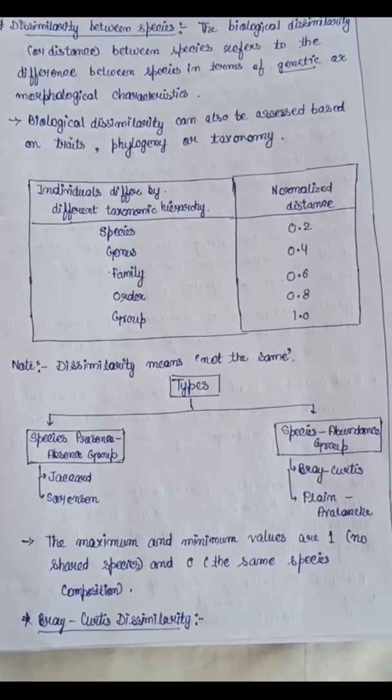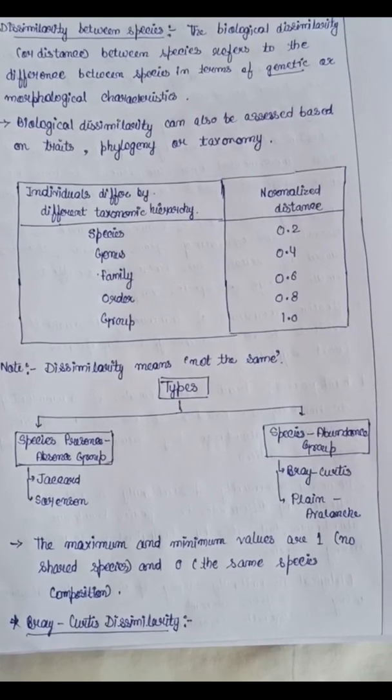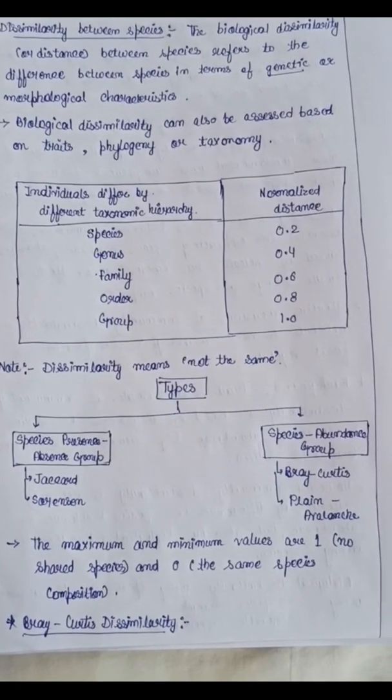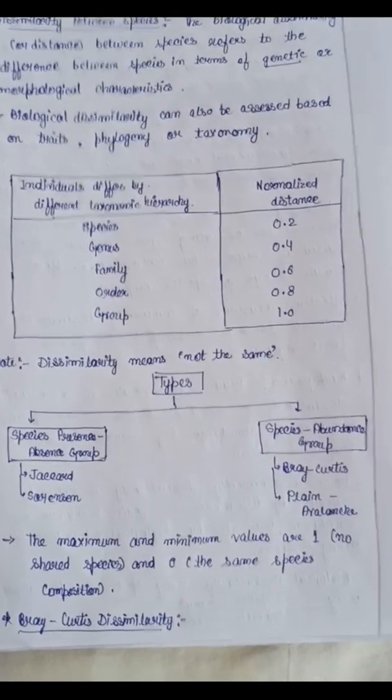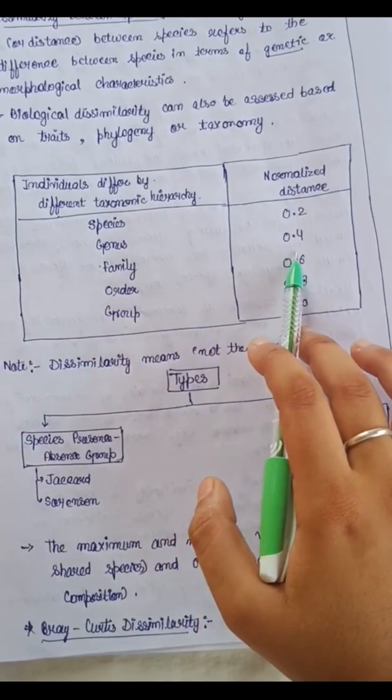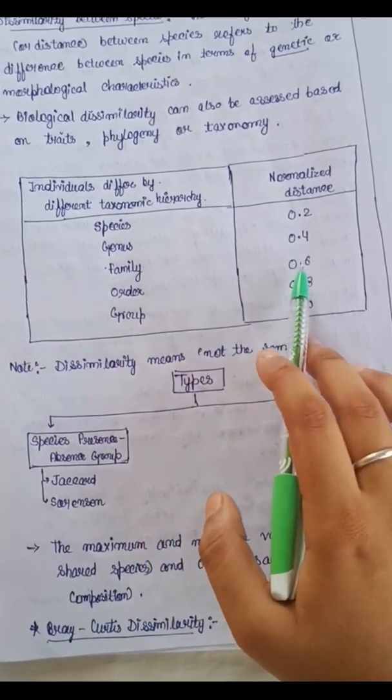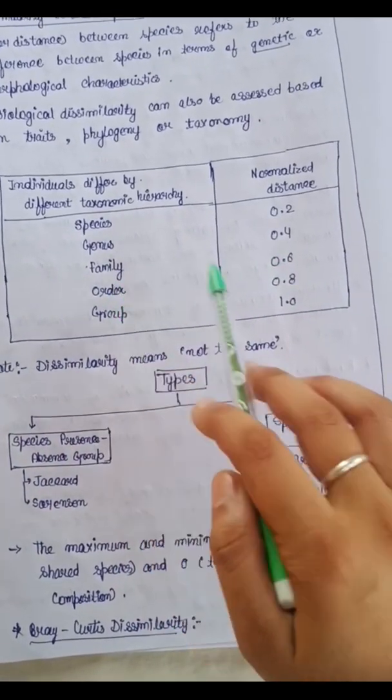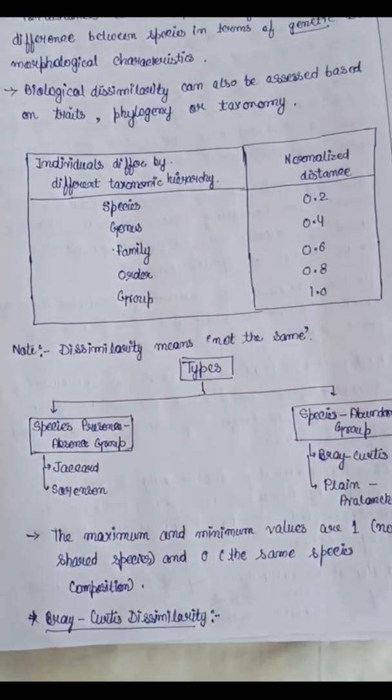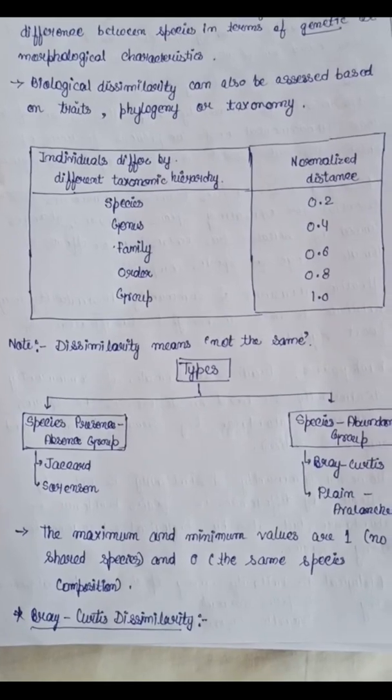This table shows individuals differ by different taxonomic hierarchy and their normalized distance: between species 0.2, between genus 0.4, between family 0.6, between order 0.8, and between group 1.0. These are the dissimilarity values. Dissimilarity means not the same.